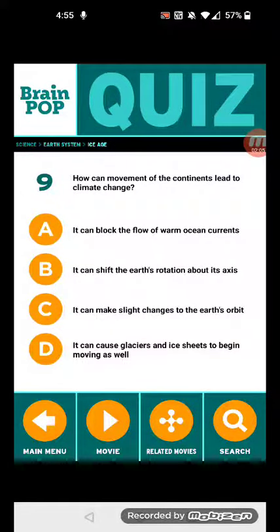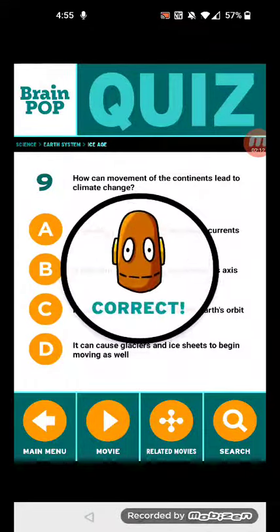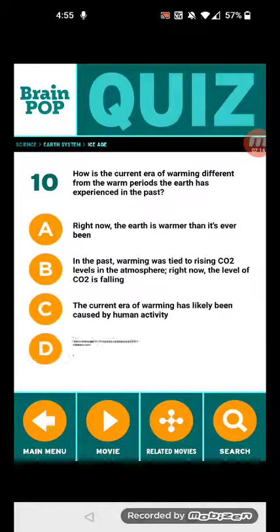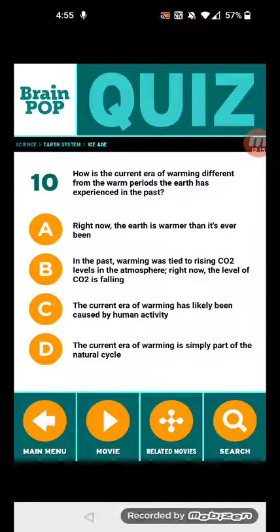Question 9: How can movement of the continents lead to climate change? It can block the flow of warm ocean currents. And lastly, Question 10: How is the current era of warming different from the warm periods the Earth has experienced in the past?